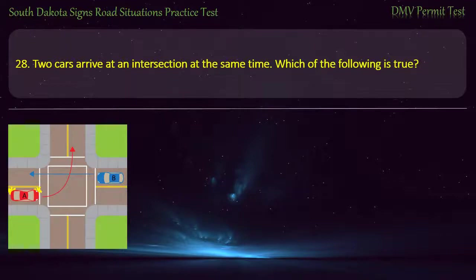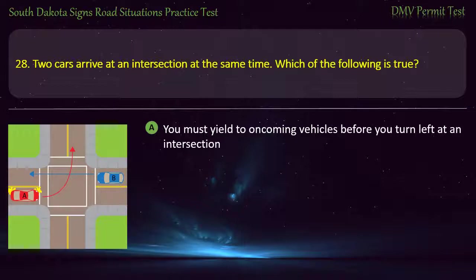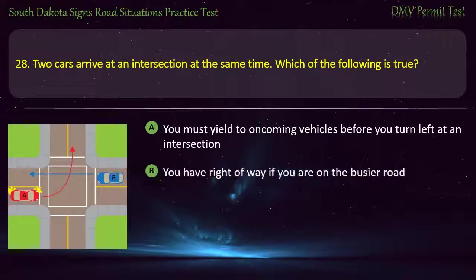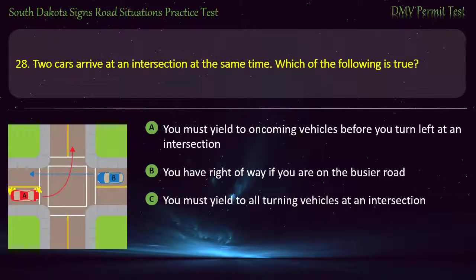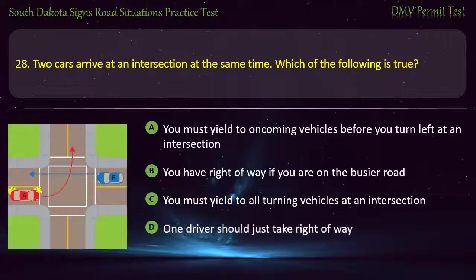Question 28: Two cars arrive at an intersection at the same time. Which of the following is true? Options: You must yield to oncoming vehicles before you turn left at an intersection; You have right-of-way if you are on the busier road; You must yield to all turning vehicles at an intersection; One driver should just take right-of-way. Answer: You must yield to oncoming vehicles before you turn left at an intersection.